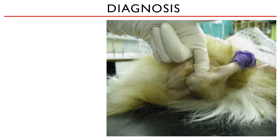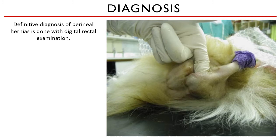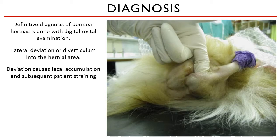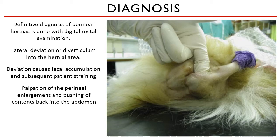Definitive diagnosis of perineal hernias is done through a digital rectal examination. A lubricated gloved finger is gently inserted into the patient's rectum. If you feel a lateral deviation or diverticulum of the rectum and colon into the side where the hernia is, that is a confirmatory diagnosis. This deviation causes fecal accumulation and subsequent patient straining.